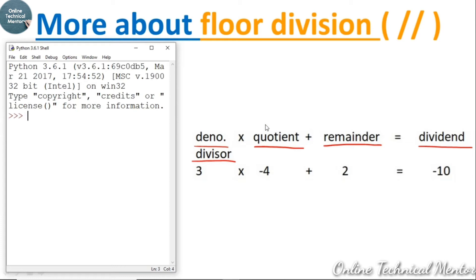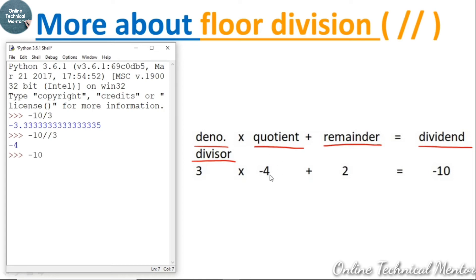Let me show this in the Python interpreter. When minus 10 is divided by 3 we get minus 3.333. For floor division: minus 10 double slash 3 gives the quotient minus 4. And minus 10 modulo 3 gives 2, which is the remainder.